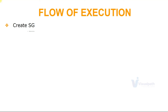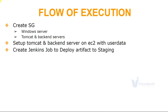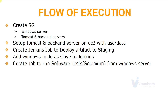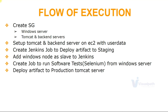Then we'll make some code changes with Git and push new code to see the CI pipeline in action. Next, to extend it to Continuous Delivery, we need to create security groups for Windows server, Tomcat, and backend servers. We'll set up Tomcat and backend servers on EC2 instances with user data for automatic provisioning. We'll create a Jenkins job to deploy the artifact to the staging Tomcat server, then add a Windows node as a slave to Jenkins to execute our software test cases. A job will execute on the Windows server running our Selenium test suite. After that, we'll deploy the artifact to the production server and finally connect all jobs in the build pipeline together.